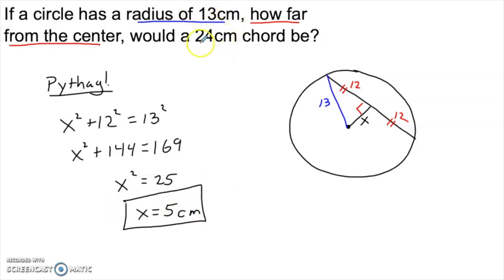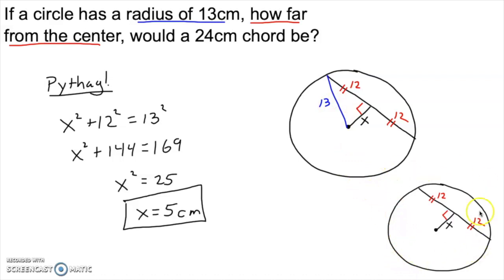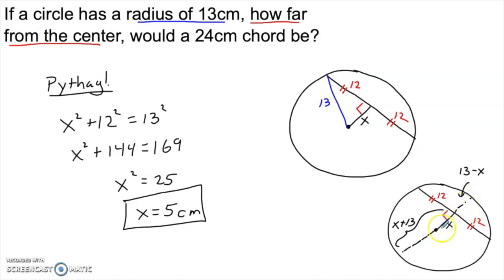Don't forget units — we're talking about centimeters and they're asking for a distance, so the chord is 5 centimeters from the center. You could also solve this as a product of two intersecting chords by extending the perpendicular into a full diameter. That gives segments of (x + 13) and (13 − x) on the diameter, and two segments of 12 on the chord. Setting up the products and solving the resulting quadratic, the positive solution is still 5. I think adding the radius and using Pythag is the easier path, but any correct approach is fine.